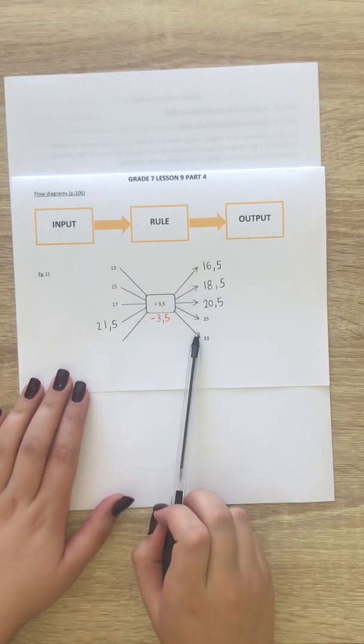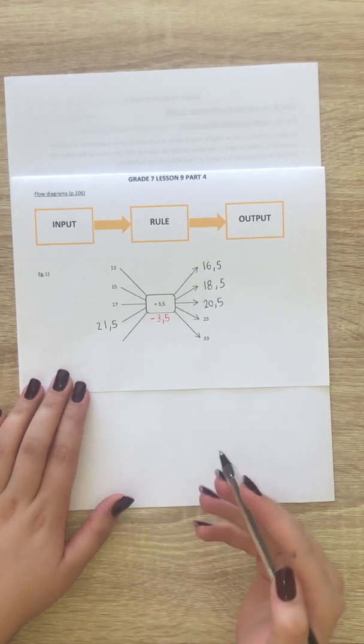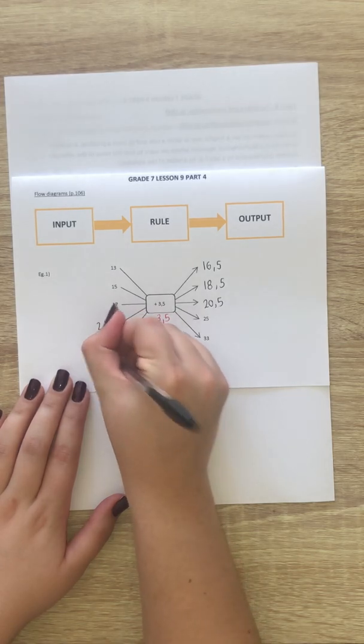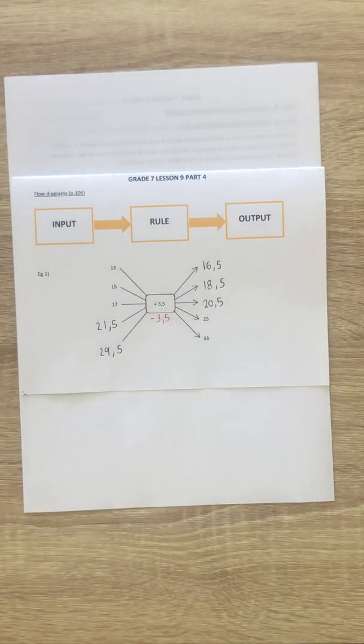Okay, now we do the same here. 33 minus 3 is equal to 30, minus a half is then 29 and a half. So flow diagrams are very, very easy.